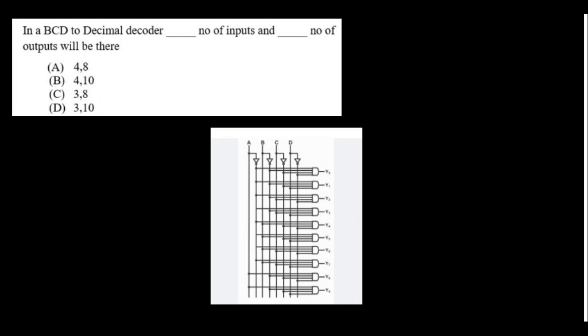In a BCD to decimal decoder, BCD provides 4 inputs and the number of outputs will be 10. Option B is the right answer — 4 inputs and 10 outputs.